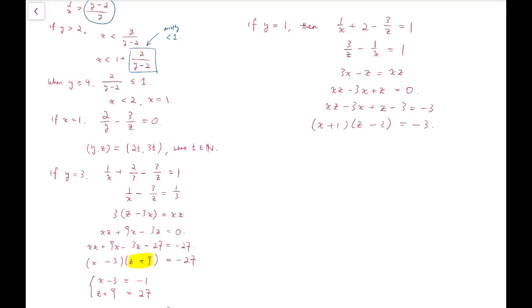Now using a similar argument, we know that z minus 3 has to be negative 1, and x plus 1 then has to be 3. So z equals 2, x equals 2. That's another set of solutions.